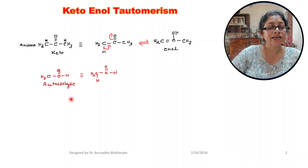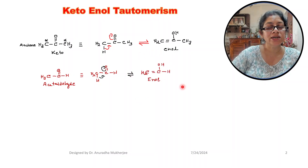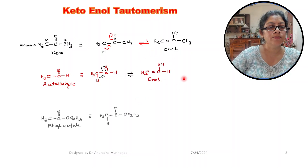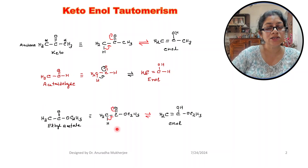Now let's check acetaldehyde. Acetaldehyde also has an alpha carbon, so this alpha carbon undergoes keto-enol tautomerism, and here also we are getting the enol form. Next is ethyl acetate — this is the alpha carbon, so this alpha carbon has alpha hydrogens and it also undergoes keto-enol tautomerism.